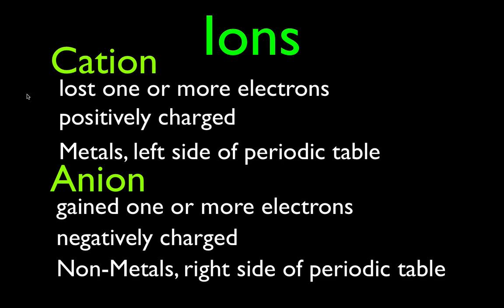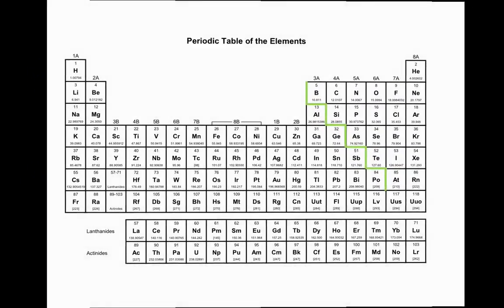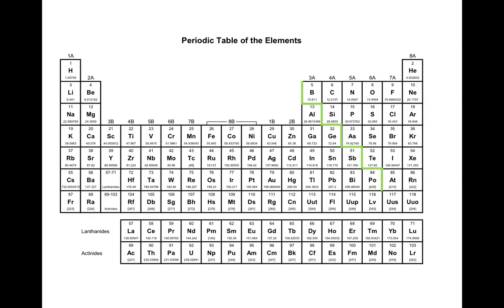Cations and anions are opposites: one loses, one gains electrons; one becomes positive, one becomes negative; one's a metal, one's a non-metal; one's on the left, one's on the right side of the periodic table. This would be a good place to pause the video, get out your periodic table — we're going to write some things on it.